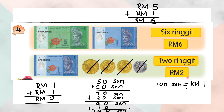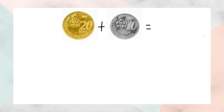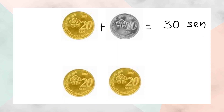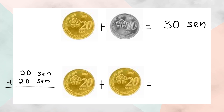100 cent sama nilai dengan 1 ringgit. Let's try this: 20 cent plus 10 cent plus 10 cent, you will get 30 cent. And this one — 20 cent plus 20 cent — zero plus zero is zero, two plus two is four, so you will get 40 cent.